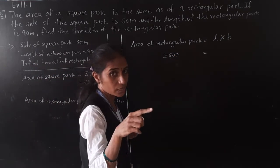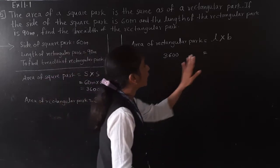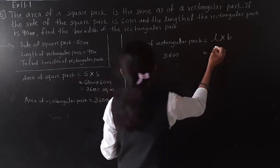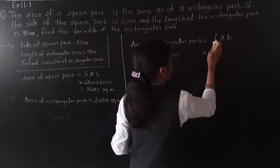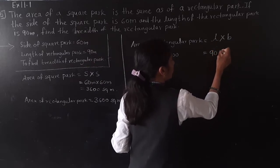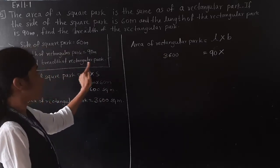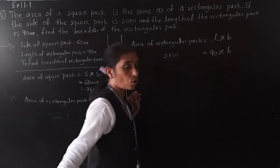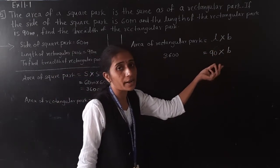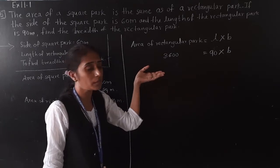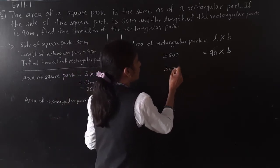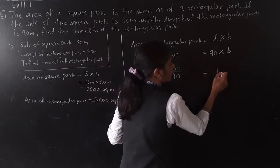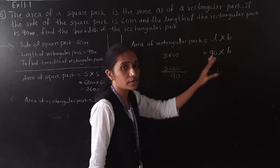Meter square means we are multiplying meters twice — m into m. So 3600 = 90 multiplied by breadth. We transfer 90 to the other side, and it becomes division. So breadth equals 3600 divided by 90. This zero gets cancelled, leaving 360 divided by 9.